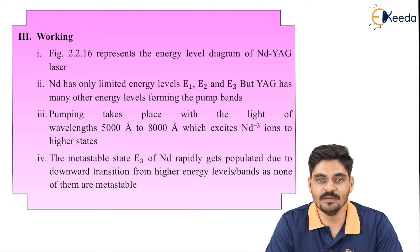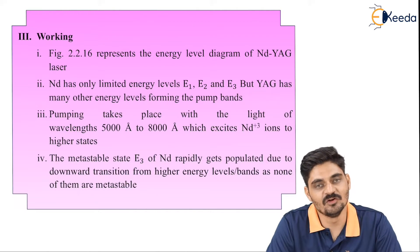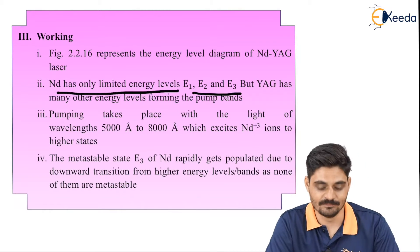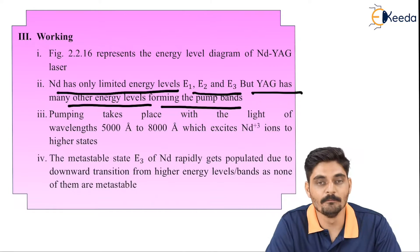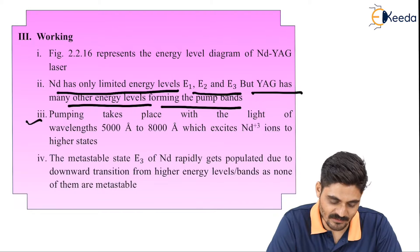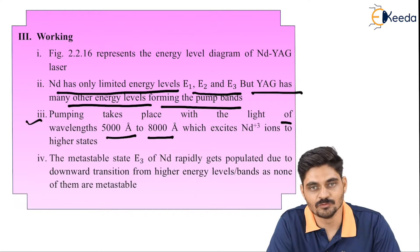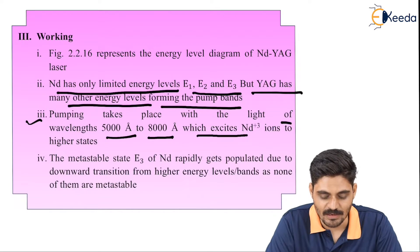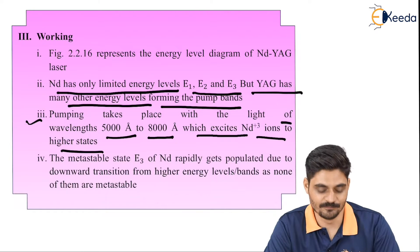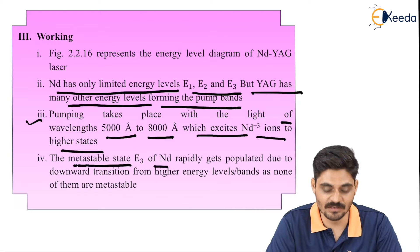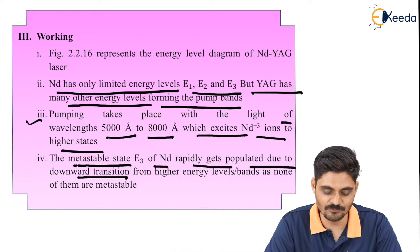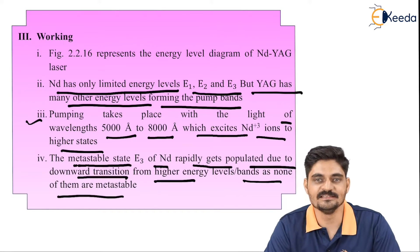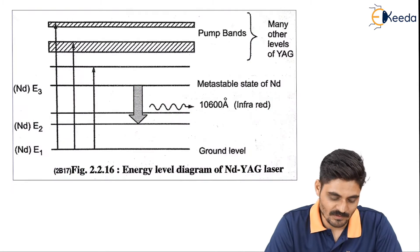For working, Nd:YAG uses how many levels of pumping? There are two pumping schemes: three-level pumping and four-level pumping. Nd:YAG has only limited energy levels E1, E2, and E3, but YAG has many other energy levels forming the pump bands. Pumping takes place with light of wavelength 5000 Å to 8000 Å. The flash tube gives photons in this wavelength range, exciting Nd³⁺ ions to higher states. The metastable state E3 of Nd rapidly gets populated due to downward transitions from the higher energy level bands, as none of those higher levels are metastable. Energy level E3 is the metastable state in Nd:YAG laser.